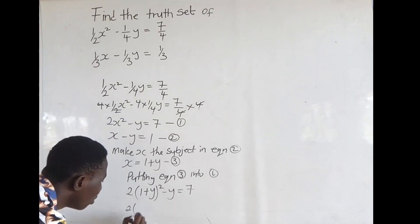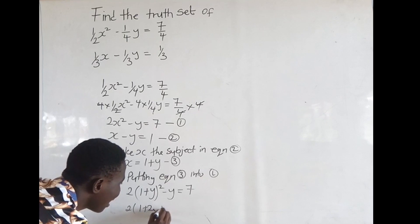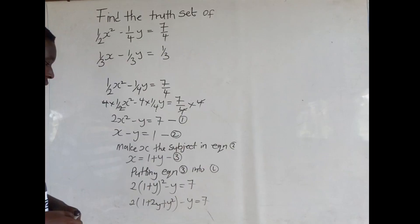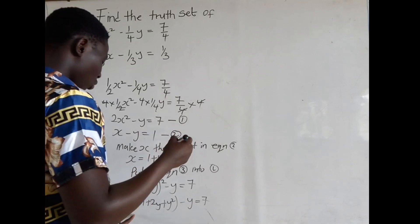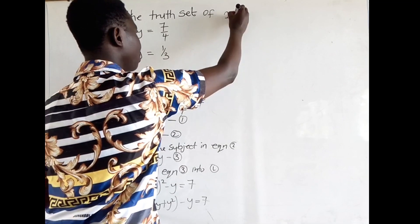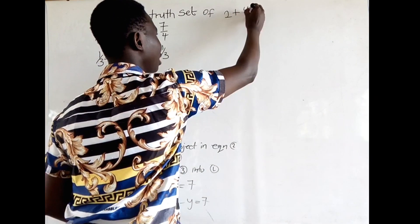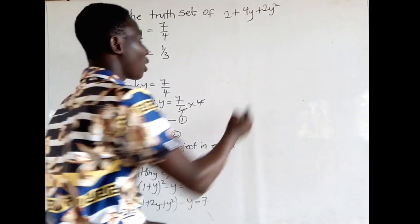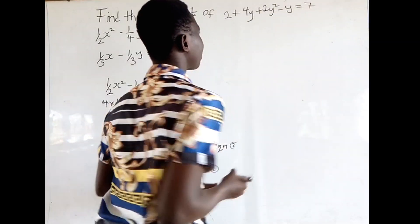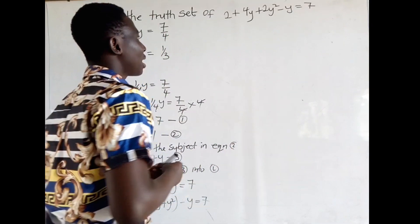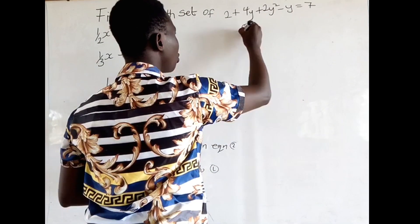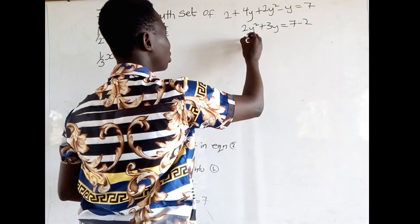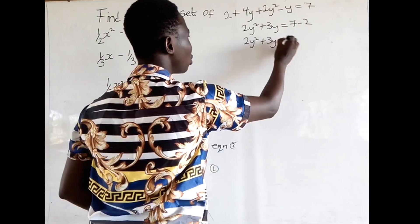When we expand the bracket (1 plus y) squared, we get 1 plus 2y plus y squared. So multiplying by 2 gives us 2 plus 4y plus 2y squared minus y is equal to 7. Collecting like terms: 2y squared plus 3y is equal to 7 minus 2, which gives us 2y squared plus 3y is equal to 5.